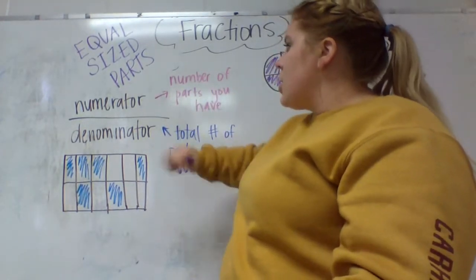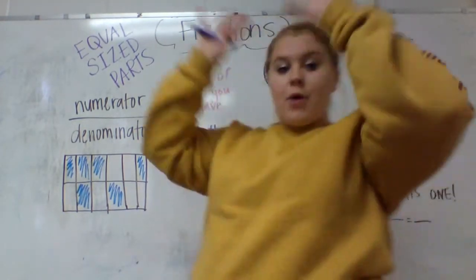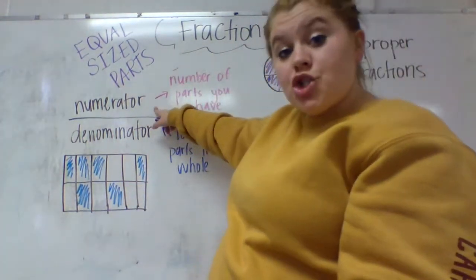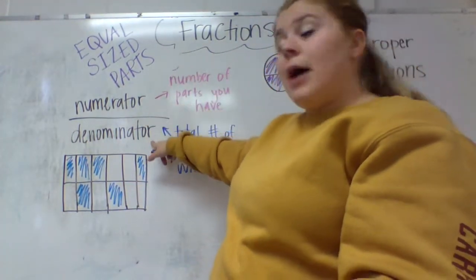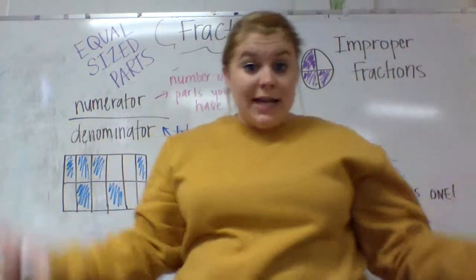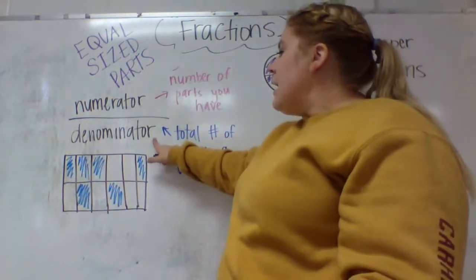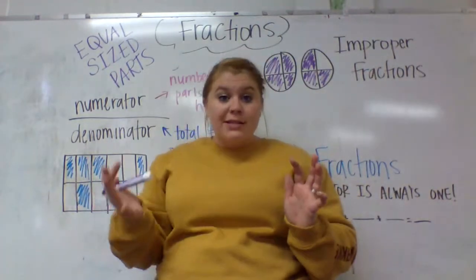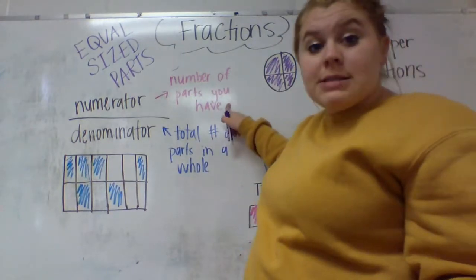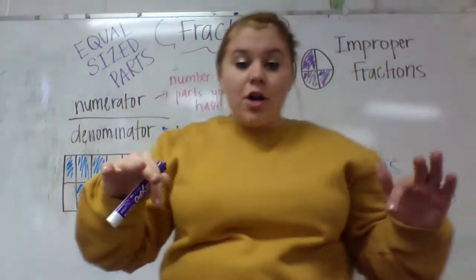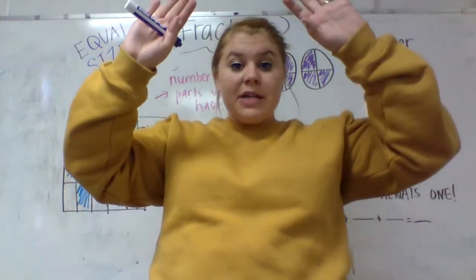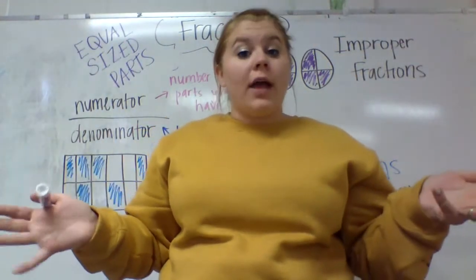When you see fractions, you have two numbers. You've got a number on top, then you've got a line, then you've got a number on bottom. The number on top is called your numerator. The number on bottom is your denominator. Remember, D like downstairs, so it's down on the bottom. The denominator is the total number of parts it takes to make a whole. The numerator is the number of parts that you have.